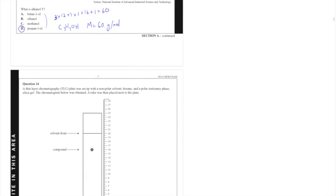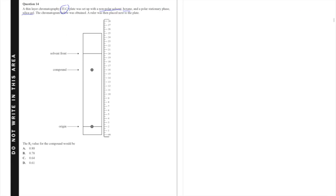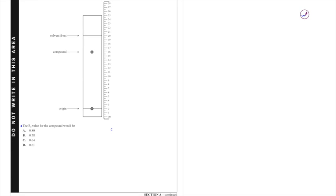Moving on to question 14. We've got a TLC plate set up with non-polar solvent hexane, stationary phase silica gel. What we're looking for is the RF value. The RF value is defined as compound minus origin divided by solvent minus origin where all of these are distances. So the distance from the compound to the origin is 16 minus 2 divided by the distance from the solvent to the origin which is 20 minus 2—that gives me 14 on 18 which corresponds to 0.78, answer B.